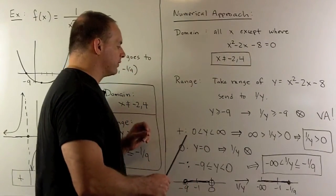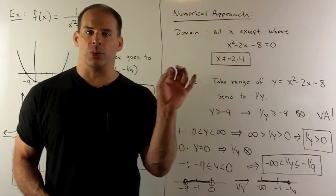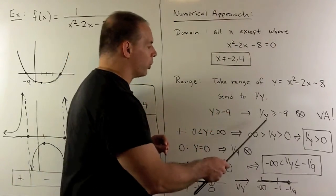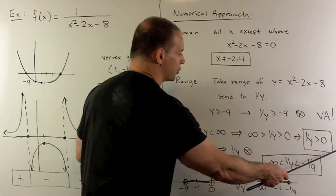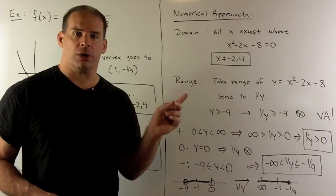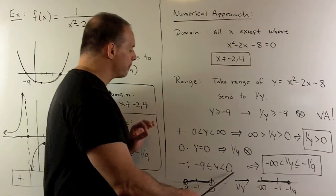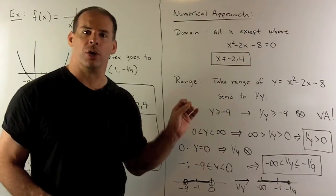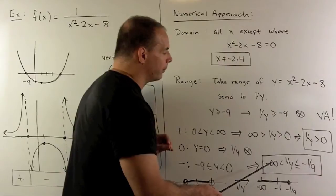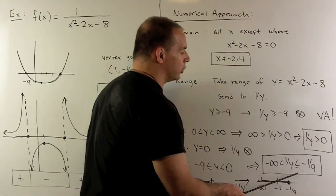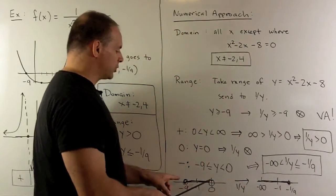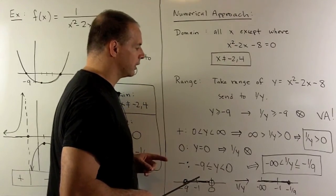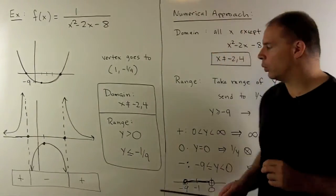For the negative piece, we consider -9 ≤ y < 0. For zero, y = 0. For the positive piece, 0 < y < +∞. We replace y with 1/y for each piece. For the positive piece: 1/0 goes to +∞ and ∞ goes to 0, so 1/y ranges between 0 and ∞ — all positive numbers. For zero: 1/0 is undefined, so we leave it out. For the negative piece: -9 maps to -1/9, and 0 goes to -∞ since we're dealing with negative numbers. So 1/y ranges from -∞ to -1/9, including -1/9. Taking these two pieces together, they agree with our answer using the graph.